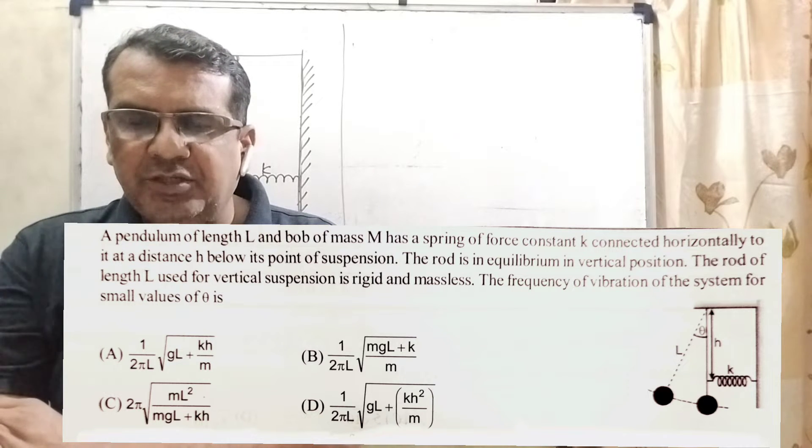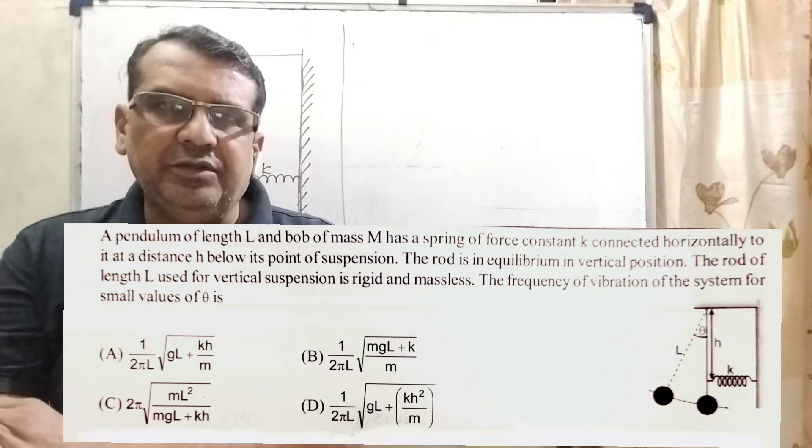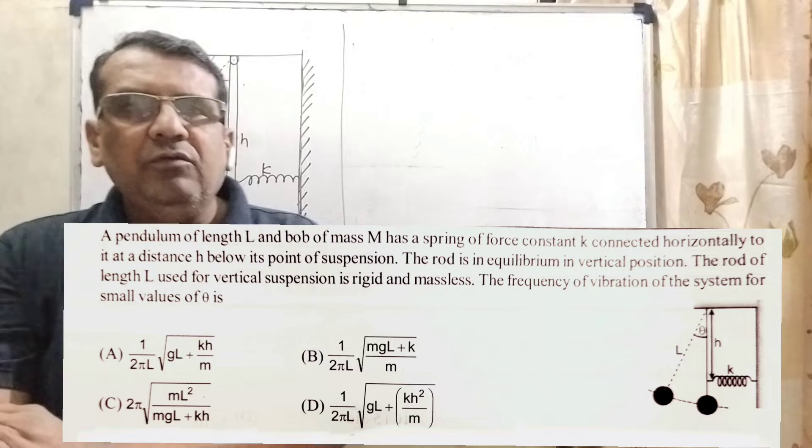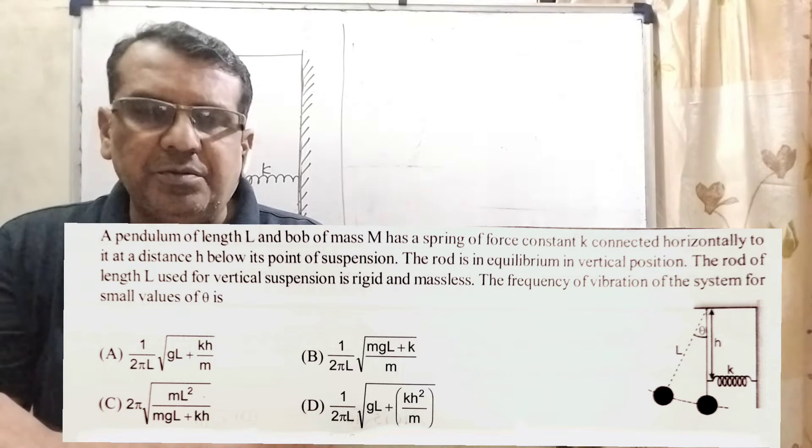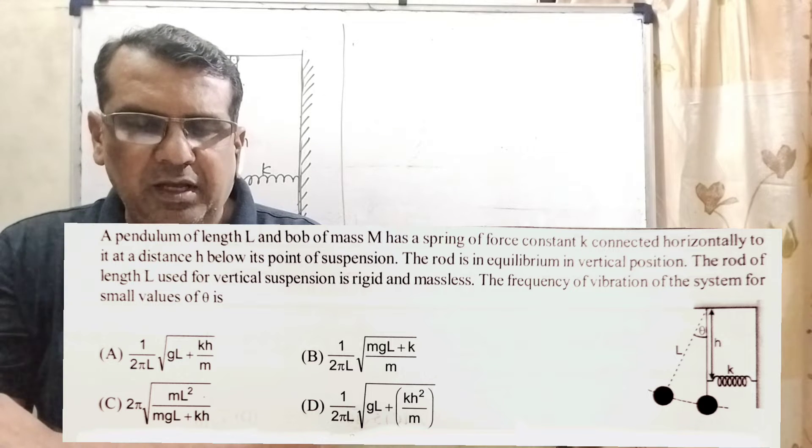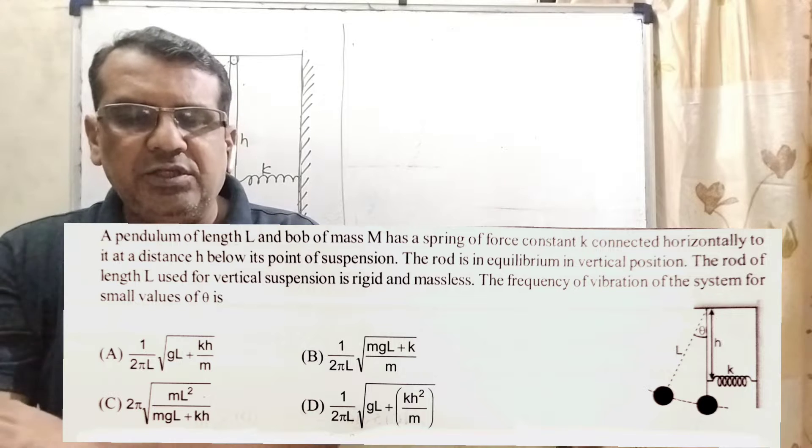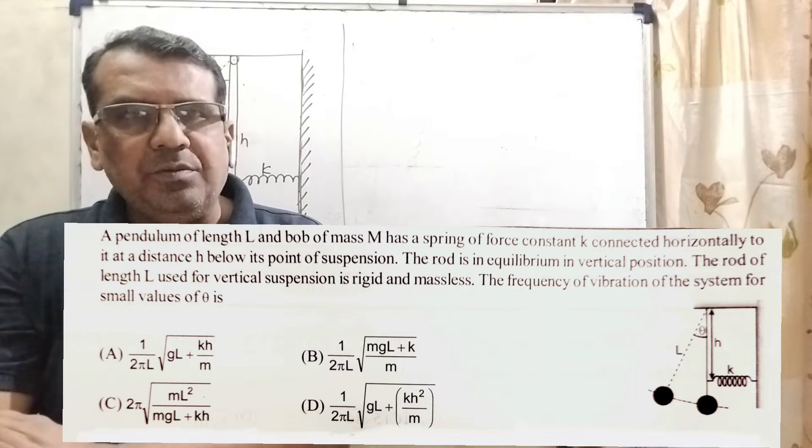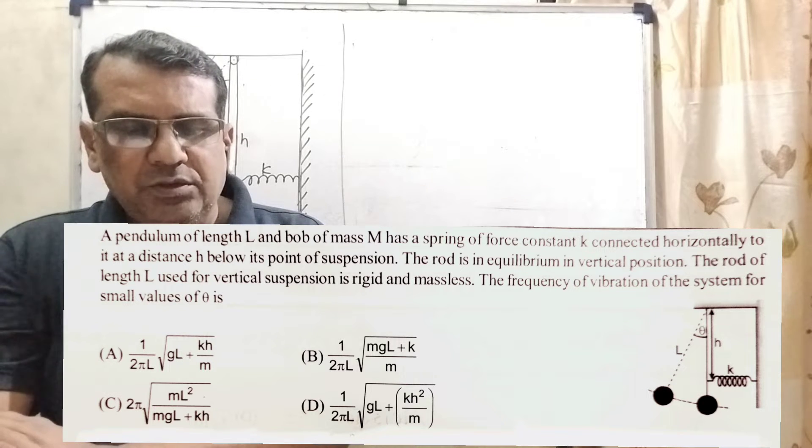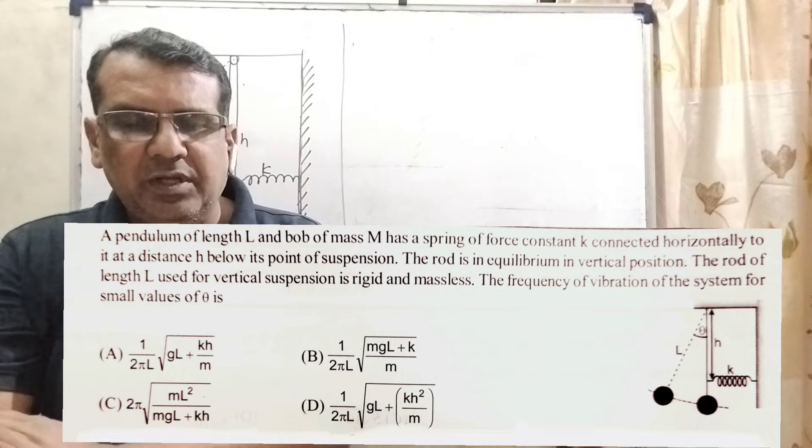The frequency of vibration of the system for small value of theta is. Here, we have given four options. Option A, 1 by 2 pi L root GL plus KH by M. Option B, 1 by 2 pi L root MGL plus K by M. Option C, 2 pi root ML square upon MGL plus KH and option D, 1 by 2 pi L root GL plus KH square by M.